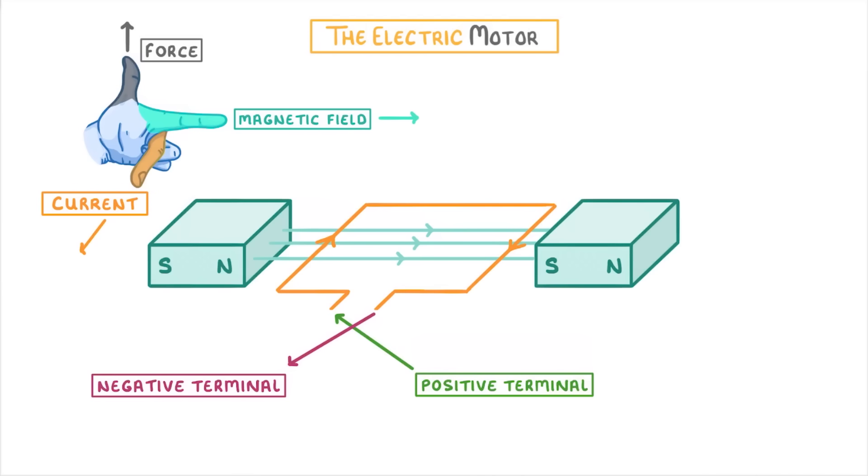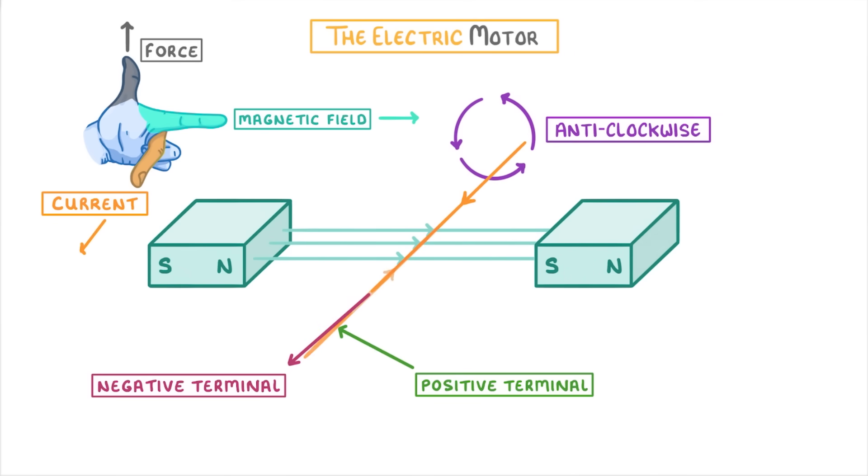So this left side is now experiencing a downwards force, and the right one is experiencing an upwards force. Overall, this means that the coil will now start turning anti-clockwise instead, and flip right back over to where it started.